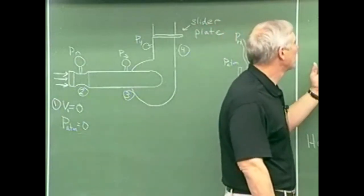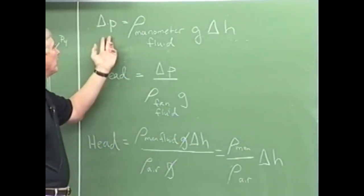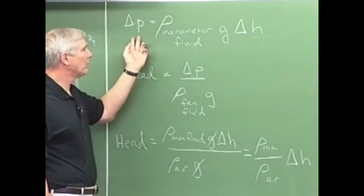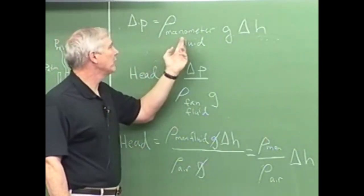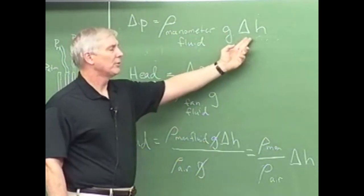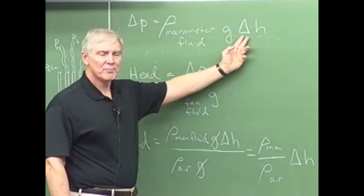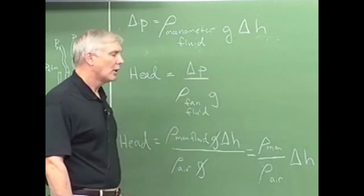Now in order to get the pressure, we just use the hydrostatic equation. The difference in pressure between any two points is equal, in this case, to the density of the manometer fluid times G gravity times the difference in the height. This is the difference in the height of the manometer fluid.